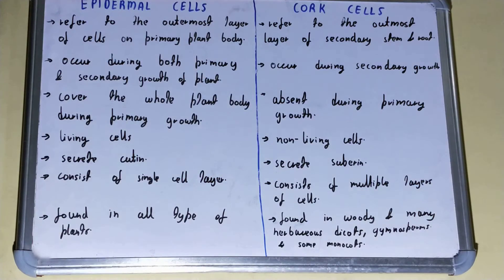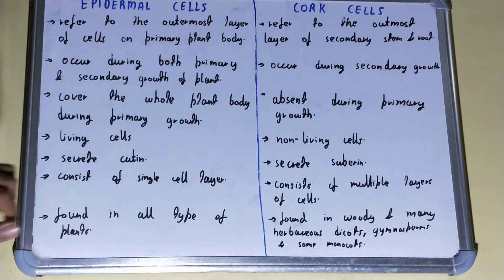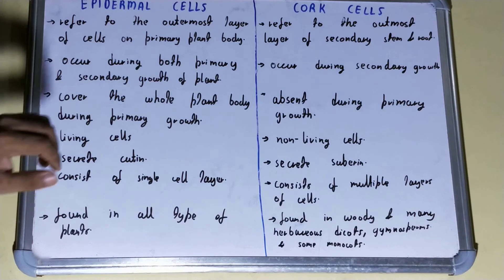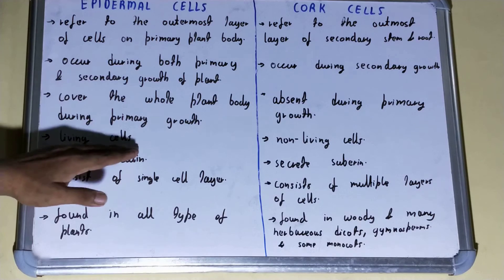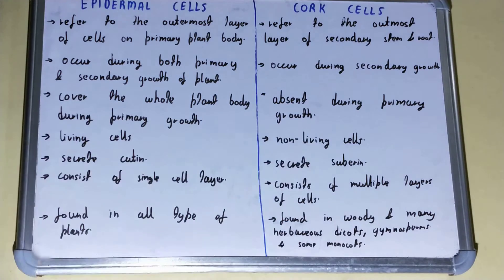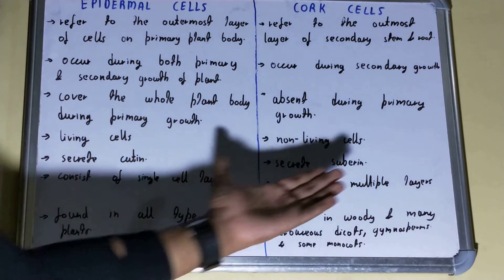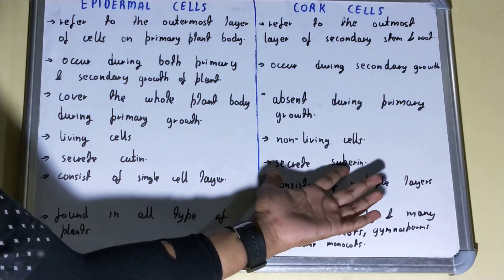Epidermal cells are living cells — most of the cells are living. Cork cells, however, are mostly non-living cells.